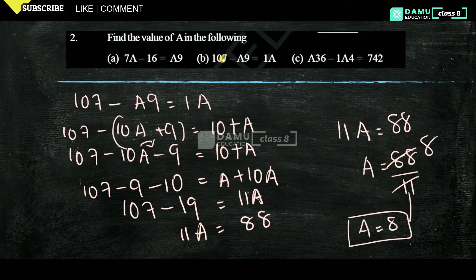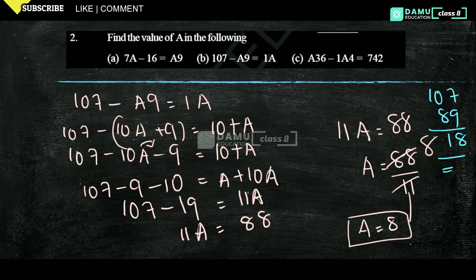You can check like this also: 107 minus 89 equals 18. Like this you can verify.